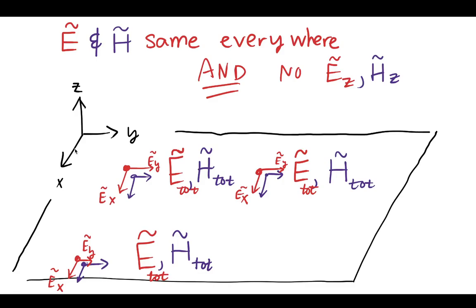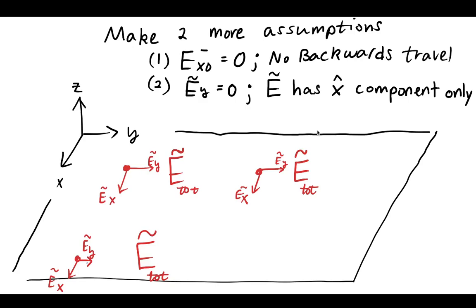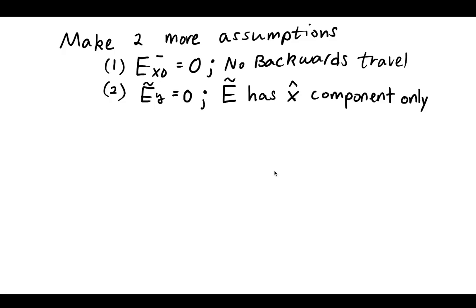If the electric and magnetic fields are everywhere, and we know there is no component of the electric or magnetic field in the z direction, then we can make a couple more assumptions to simplify and reach the final electric field solution. Let's assume that based on the boundary conditions, there is no backward wave travel. Also, let's assume that the electric field points in only one direction — the total electric field is completely contained on the x-y plane, and let's simplify further by saying it points in the x direction only.